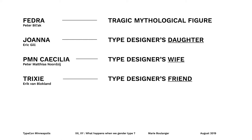Now, I said there were five. Number five is Mrs. Eaves, which I'm sure you're all familiar with. Mrs. Eaves is special — she's a Mrs. And she is named after a famous woman: Sarah Eaves, who was John Baskerville's mistress slash wife, and helped him immensely with his work as a printer. So what can Mrs. Eaves tell us?